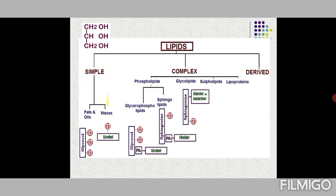Complex lipids include phospholipids (having a phosphate group), glycolipids (having a monosaccharide or oligosaccharide attached), sulfolipids (having sulfur), lipoproteins (lipid and protein), and amino lipids, among others.